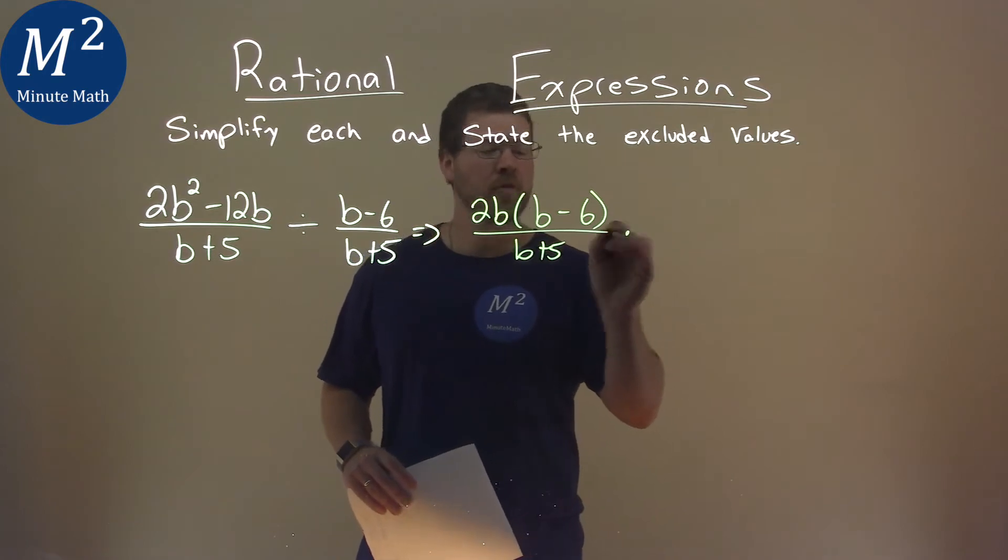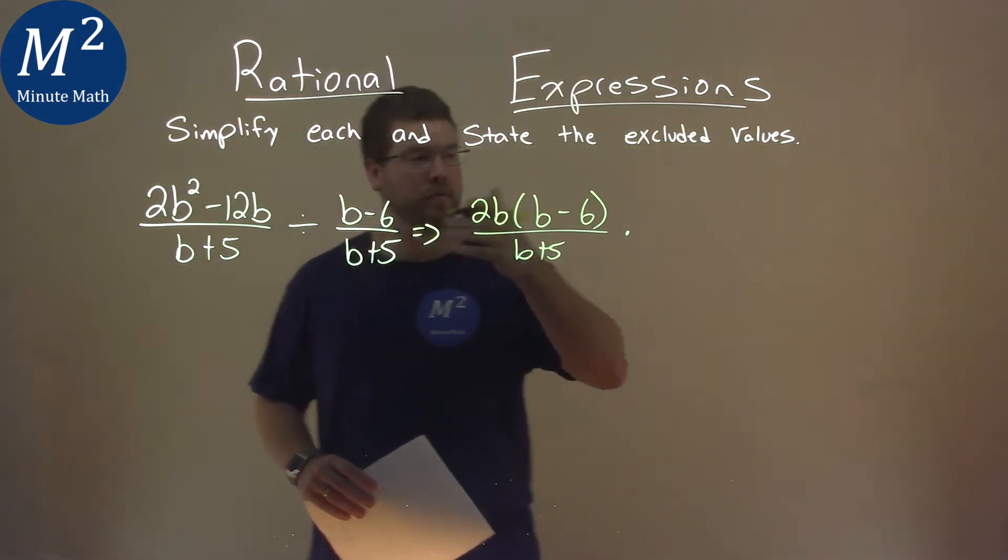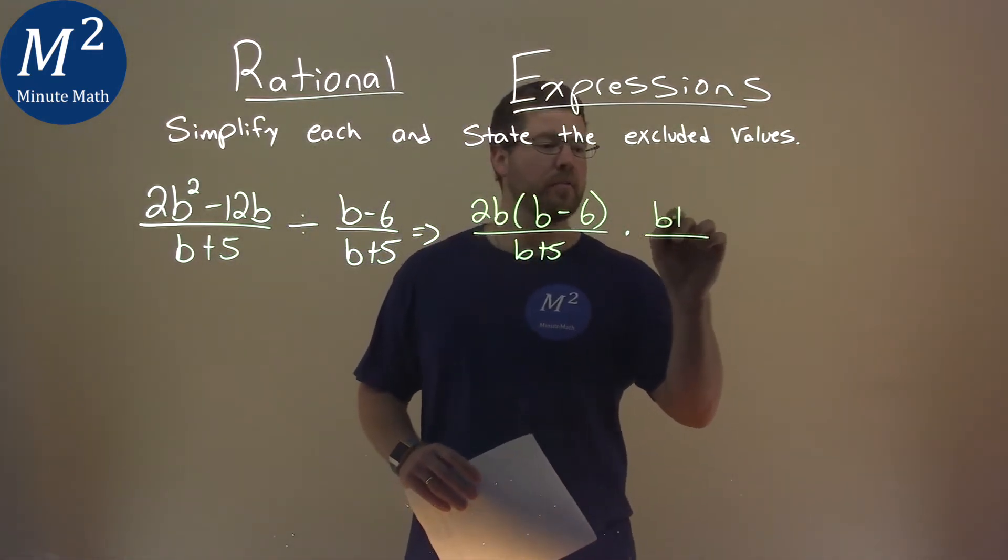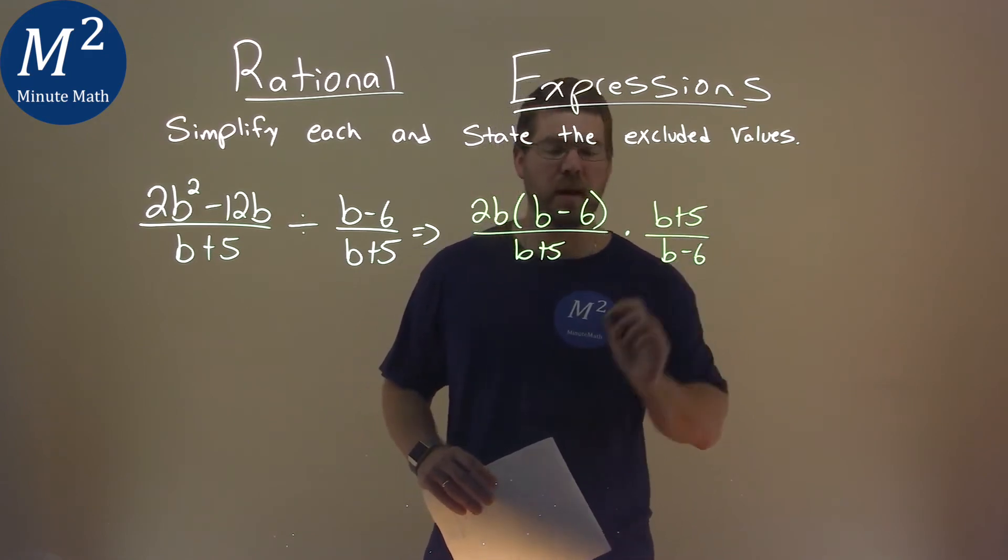And I'm going to multiply now, instead of divide, but we flip the fraction. We have b plus 5 here, and a b minus 6 in the denominator.